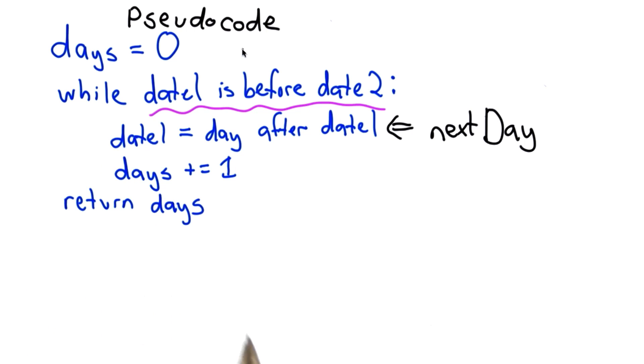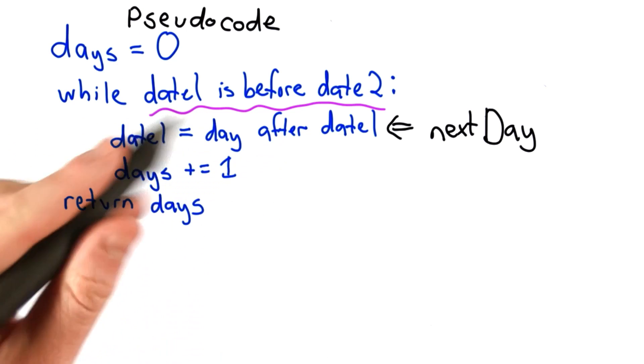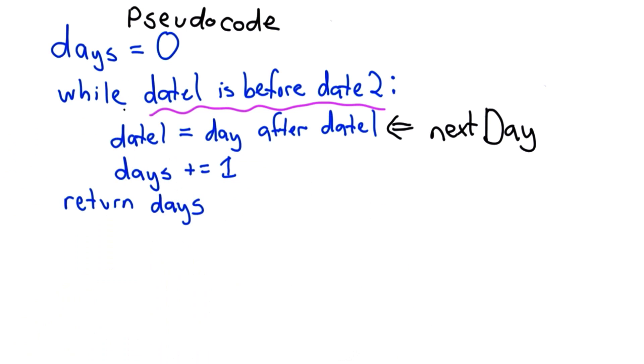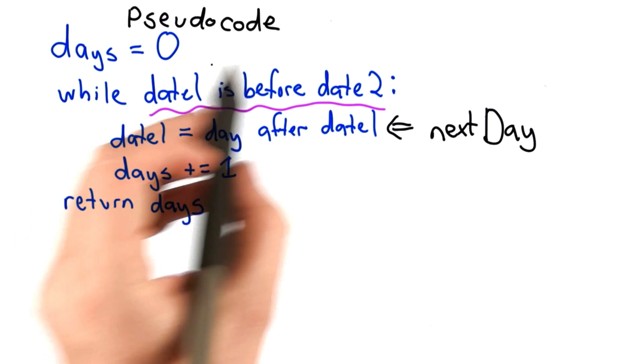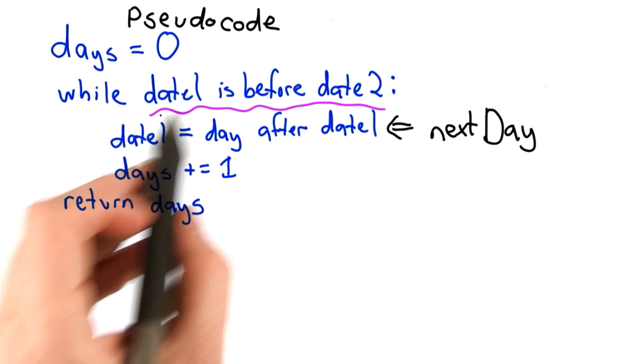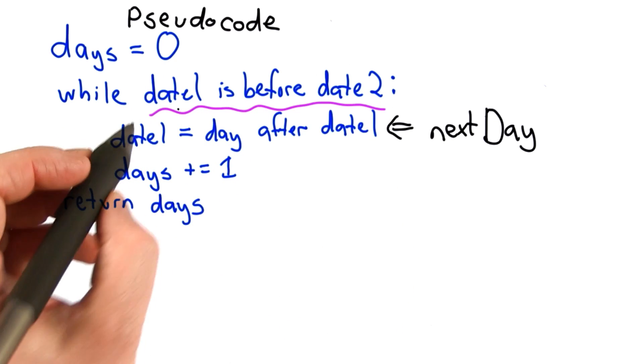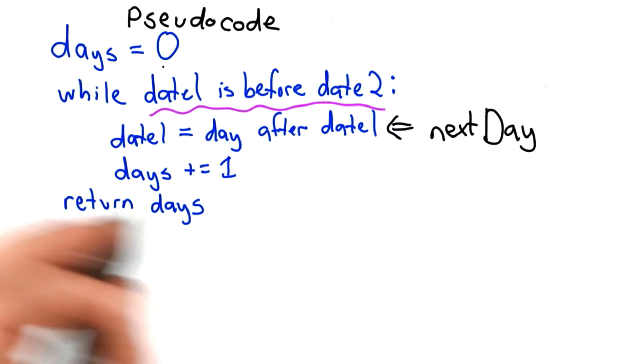We'll actually see another use for it in writing this. The other advantage of writing that as a separate helper procedure is we can test that separately. So instead of starting by writing days between dates right away, it would make a lot more sense to start by writing a helper procedure that determines the stopping condition.